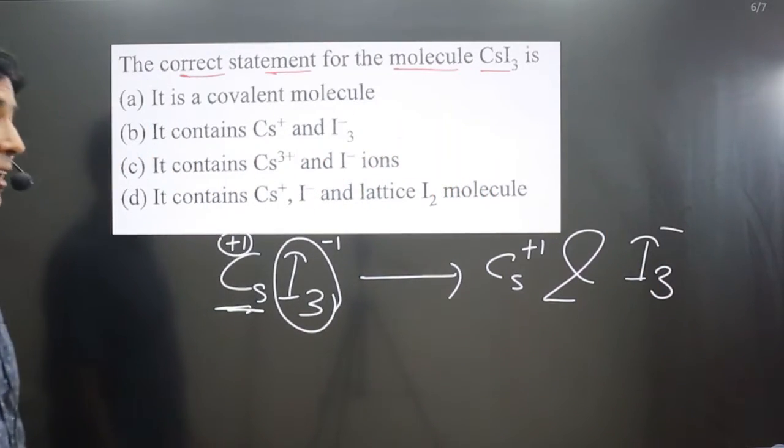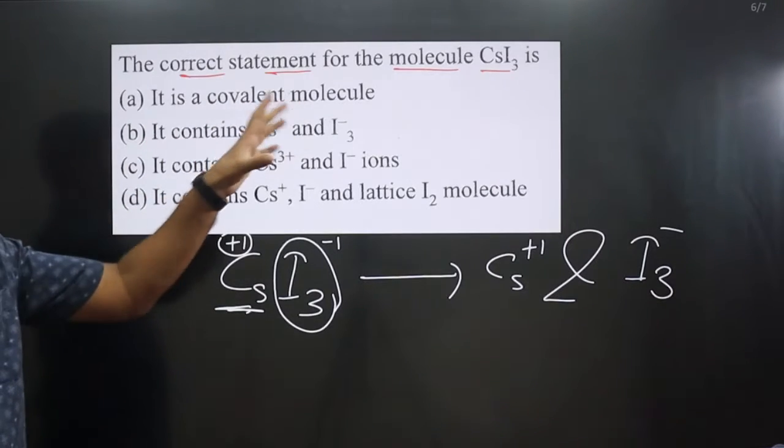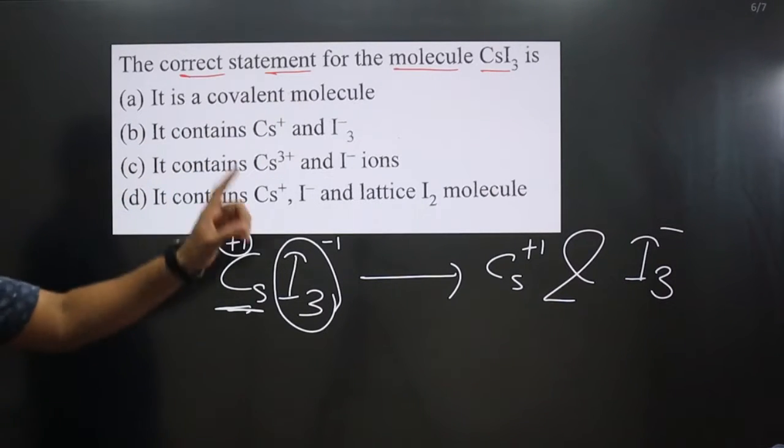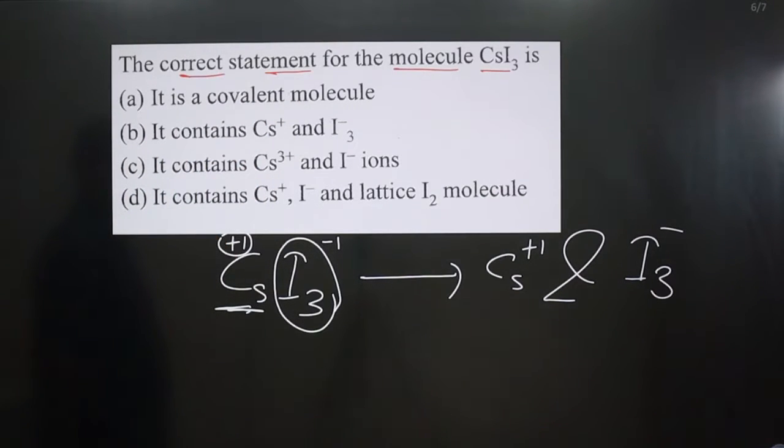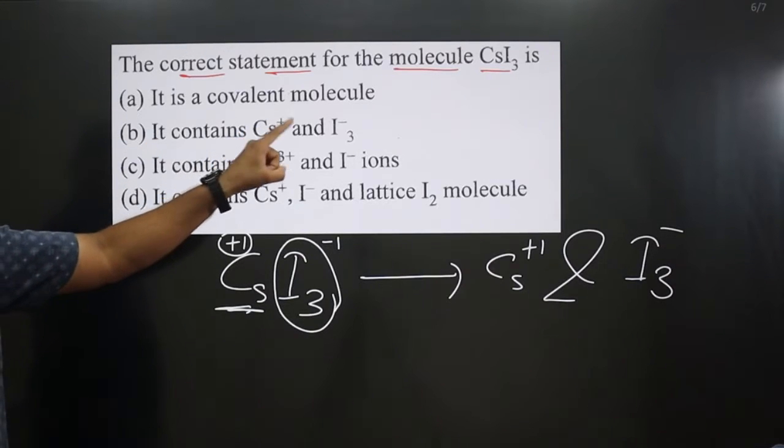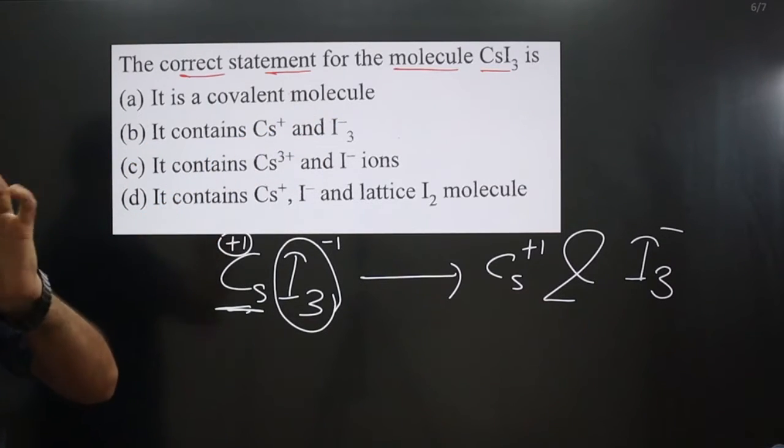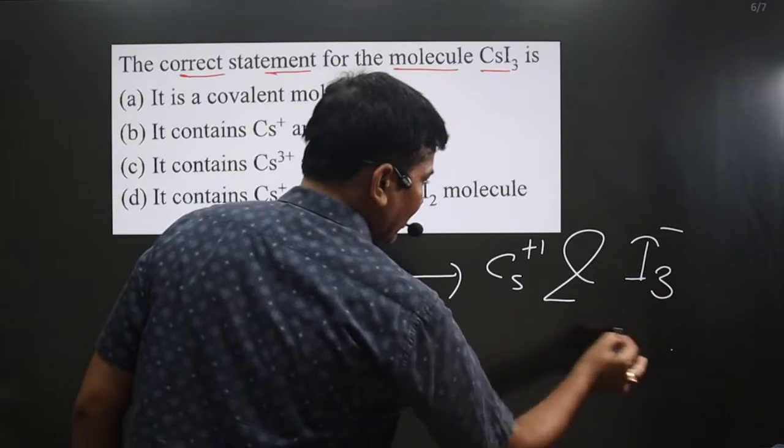Now we can go for the options. It is a covalent molecule? Not really, because metal-nonmetal combination is there. Option B: It contains Cs⁺ and I₃⁻. That is absolutely correct. You can see these ions we got.